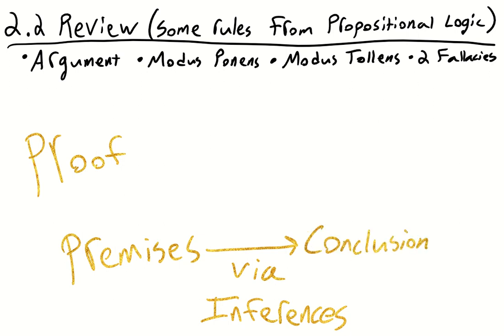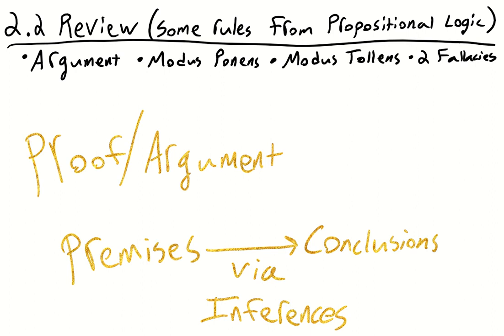We can also call a proof an argument, and here we're of course using the term argument the same way a logician or philosopher uses that term. We shouldn't just think of two people bickering back and forth in some heated debate. Indeed, Robinson Crusoe, alone on a deserted island, can engage in argumentation — he can prove things by himself to himself without another person.